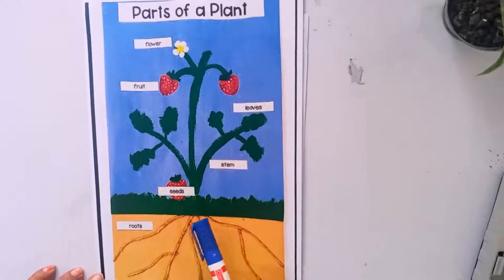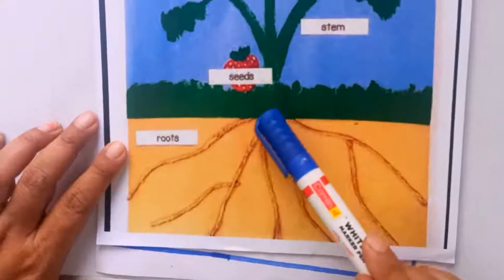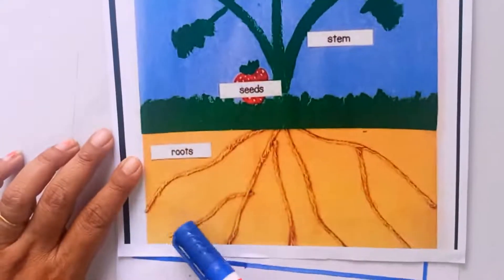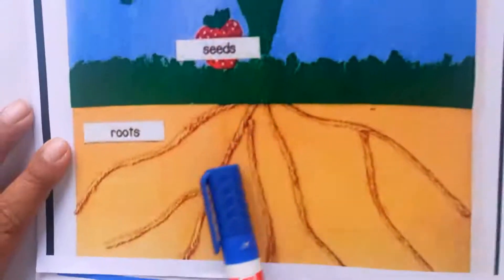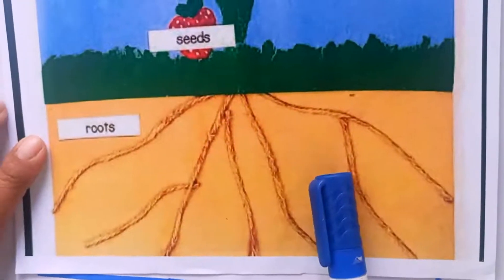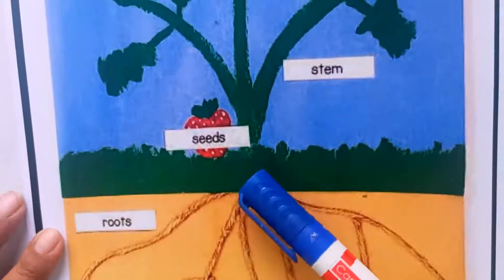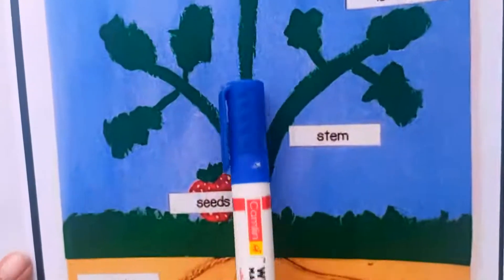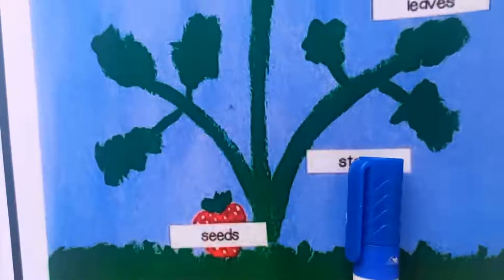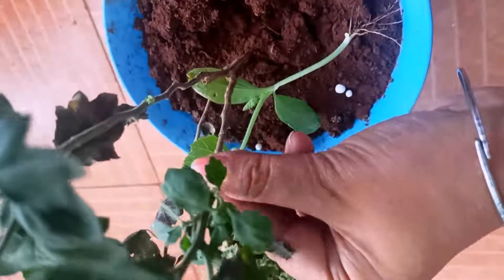I told you, you can see roots underground. These are called roots. Next, this is the stem — this part is called stem.